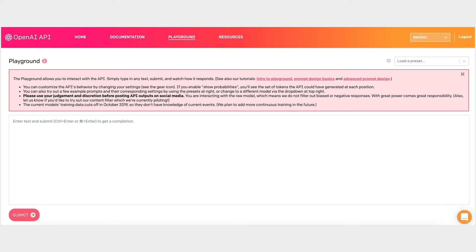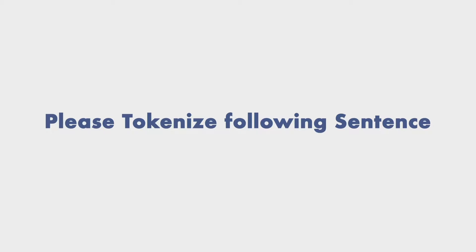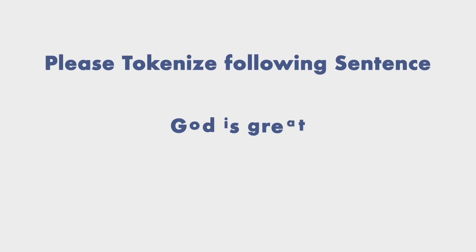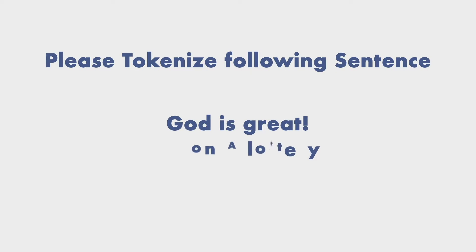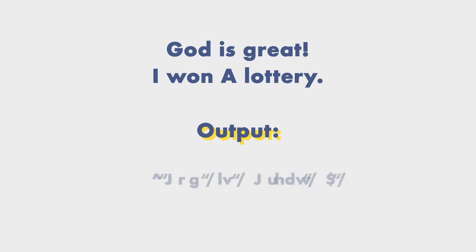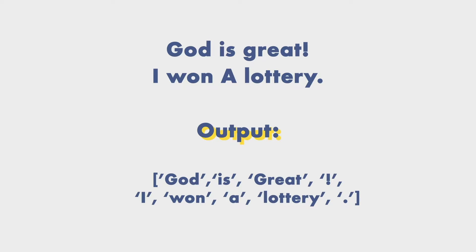I started with just one example. I wrote a sentence — 'Please tokenize the following sentence:' — and then I found a random sentence from a tutorial online on tokenization. The sentence was: 'God is great! I won a lottery.' I then included the sample output for GPT-3, writing 'Output:' and then included what the tokenized list should look like. So this is altogether one complete example.